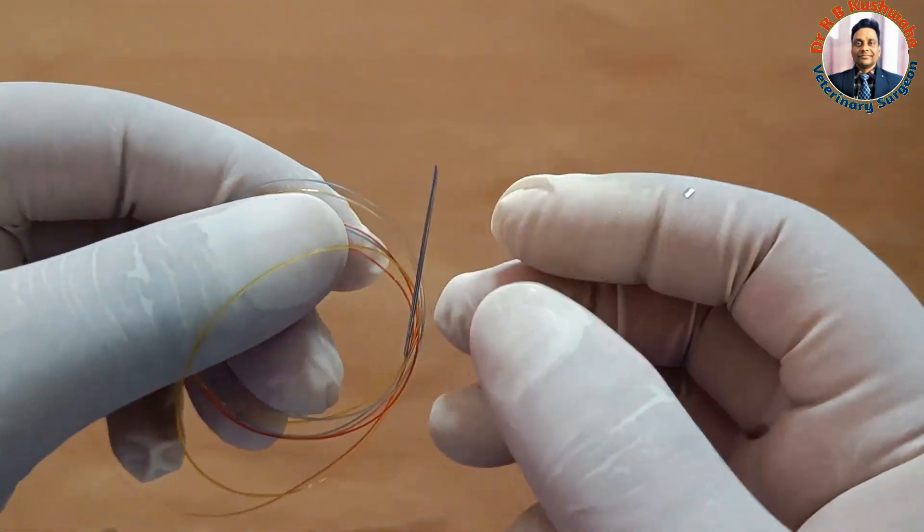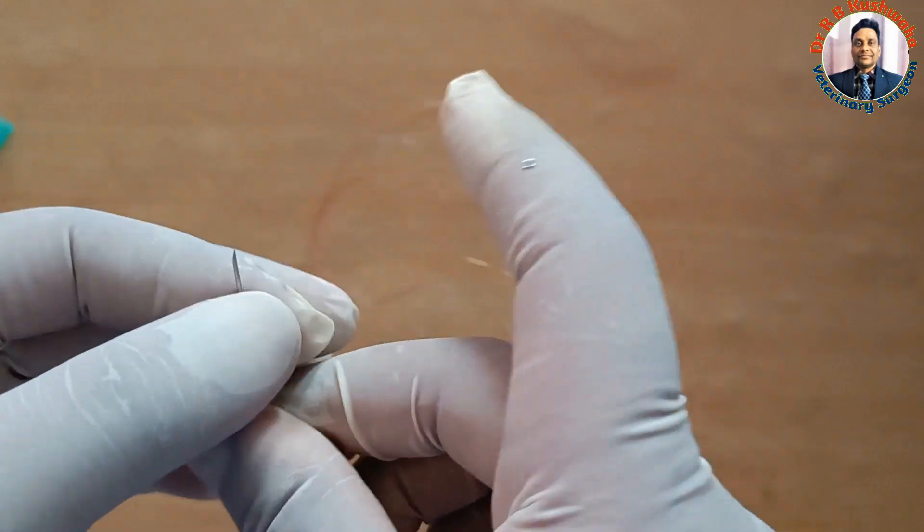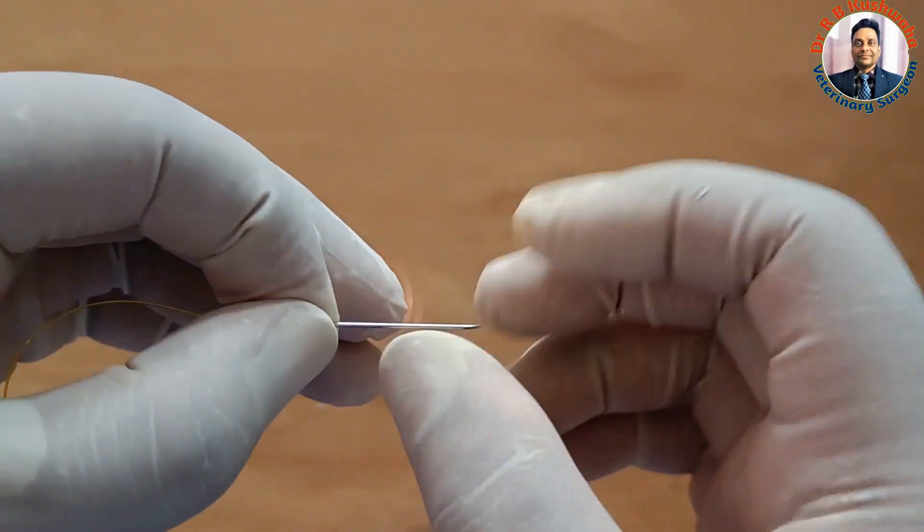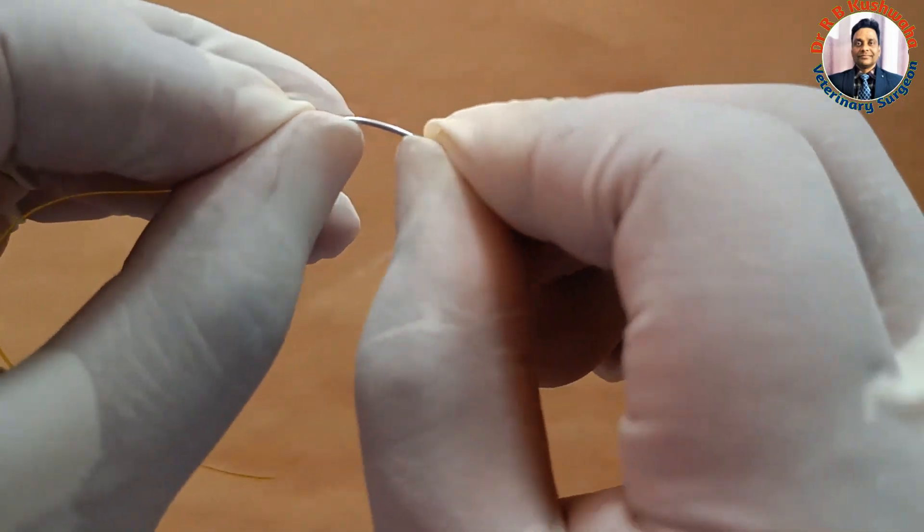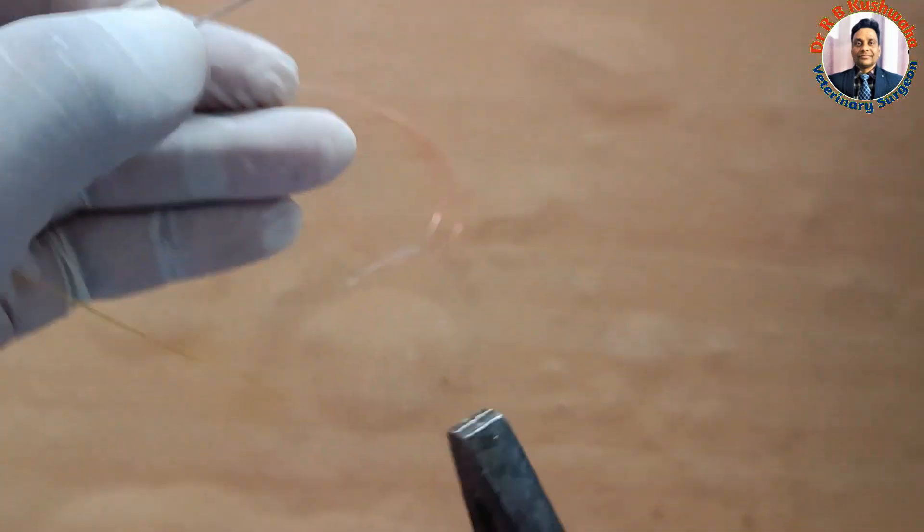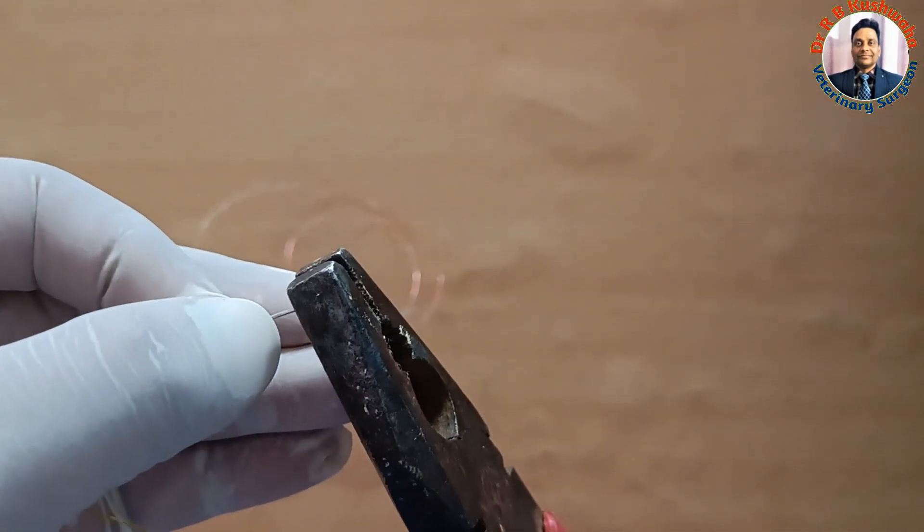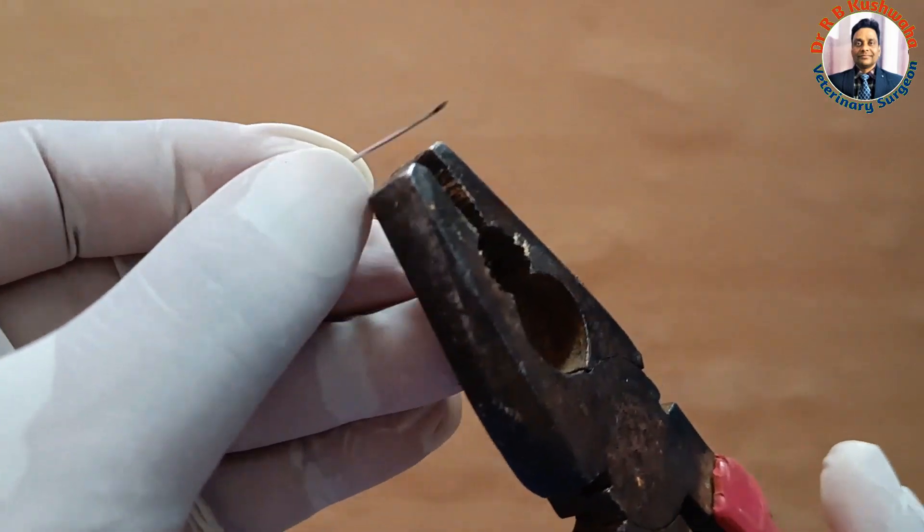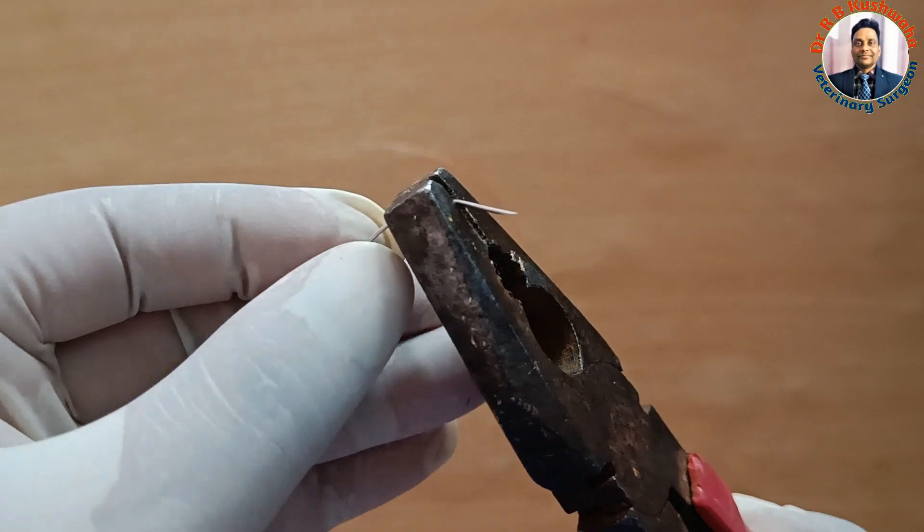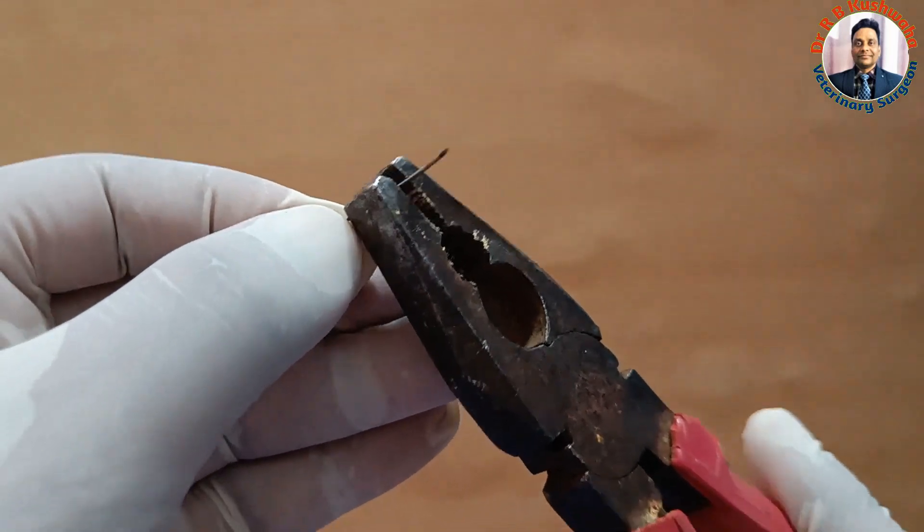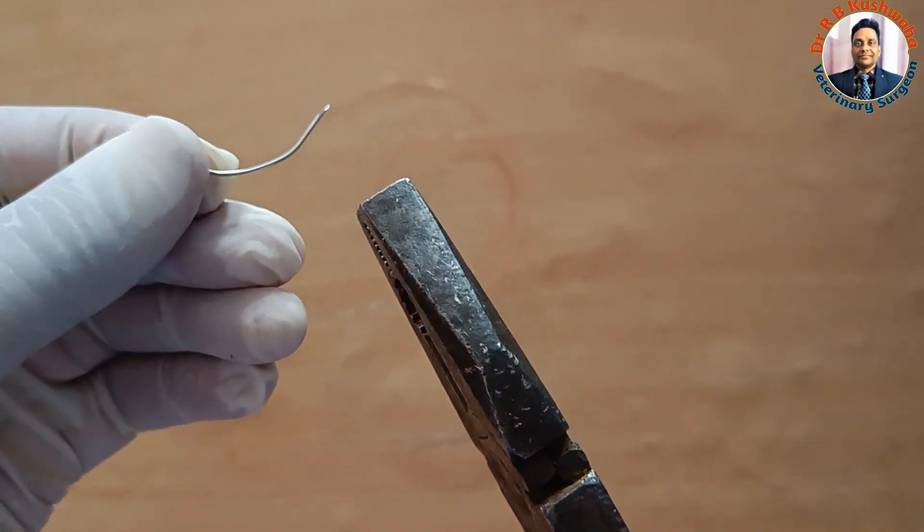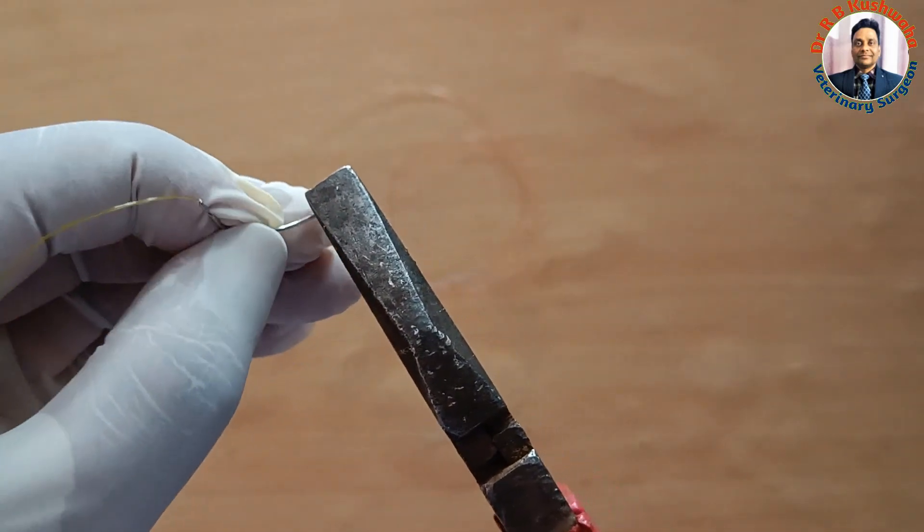If you want to make the curved needle, this hypodermic needle you could easily curve either by bending like this, or even you can use the plier. You can also curve as per the requirement. If you need half curve then you can make half. If you need one fourth you make one fourth. But care should be taken that while making it, it should not be bent sharply.